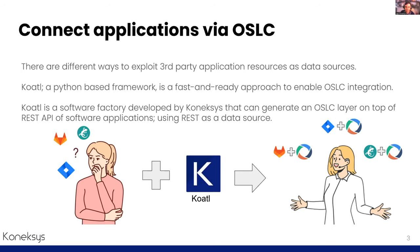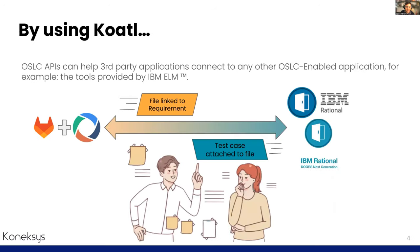By taking advantage of the REST architecture and using applications as data sources, we can now connect an OSLC API integration for GitLab with tools provided by IBM ELM. For example, we can connect the GitLab OSLC API with DNG to specify that a specific GitLab file is linked to a DNG requirement. We can also use RQM tools in ELM to link a test case to a specific GitLab file.